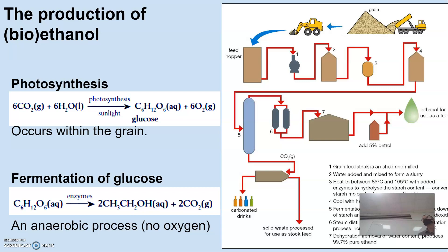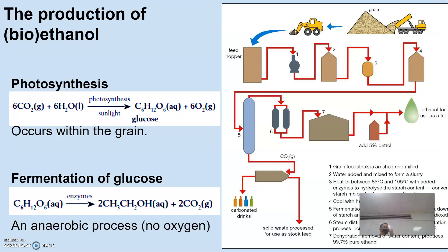Fermentation is without oxygen, so it follows a different chemical pathway that produces different byproducts. Instead of producing carbon dioxide and water, we produce ethanol and carbon dioxide. Similarly, if our body receives insufficient oxygen, it breaks down glucose differently and forms lactic acid, causing cramping — different biochemical pathways.